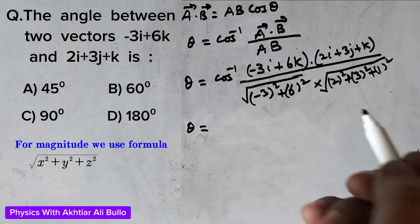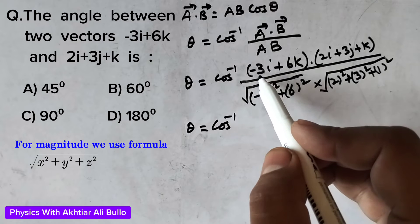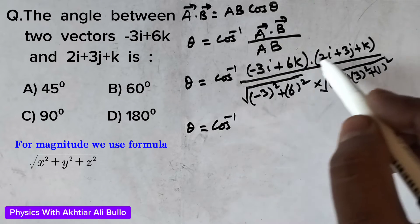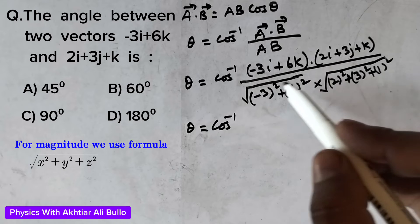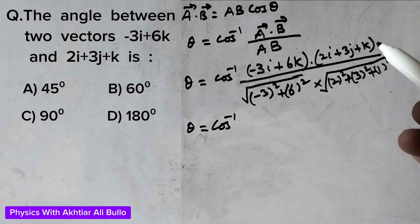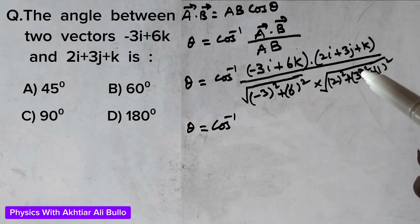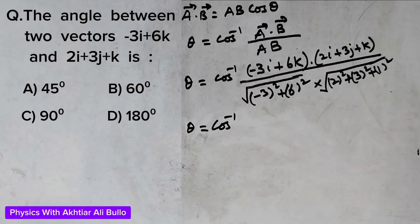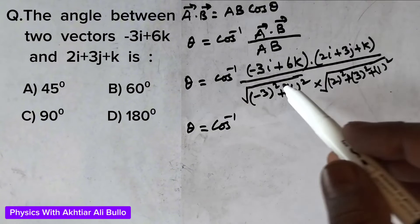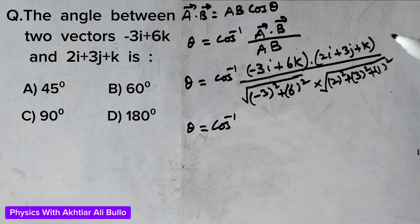For simplification, we multiply i with i, j with j, and k with k, because i dot i equals 1, j dot j equals 1, and k dot k equals 1. In all other cases, such as i dot j or j dot k, the result is 0.